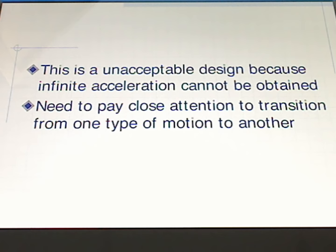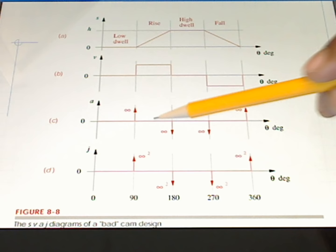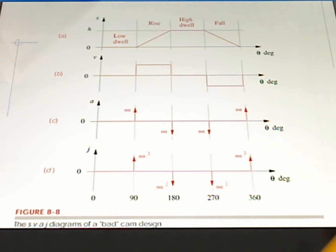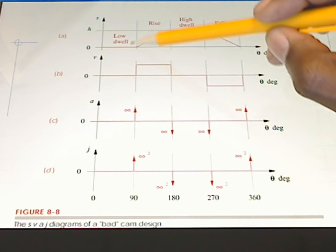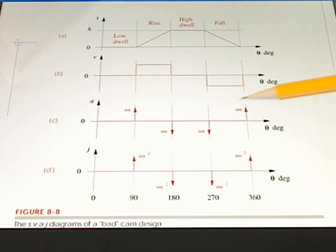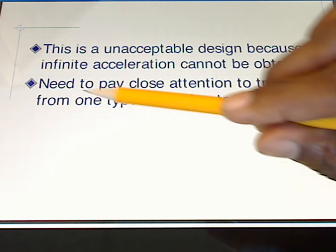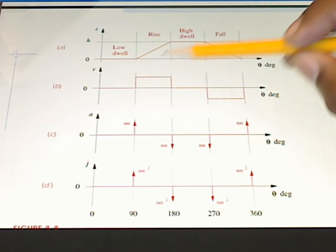This is an unacceptable design because we have infinite acceleration, which cannot be obtained in real life. We need to pay very close attention to the transition from one type of motion to another. Once we pick the straight line, all derivatives are fixed and cannot be changed. We need to find functions that go from low to high and high to low without producing infinities in the acceleration profile — meaning we must pay more attention to what happens at the transitions between dwell and rise or fall.